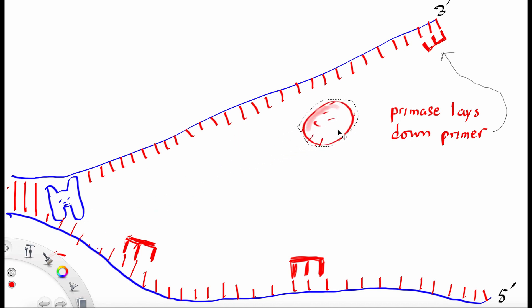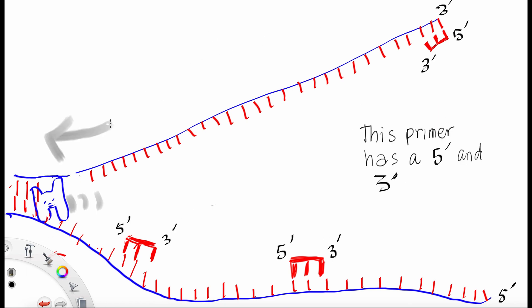Notice the top one only has one primer and the bottom one has several. I've drawn two of them here. This primer has a 5' and 3' end. And helicase is moving constantly in a single direction.